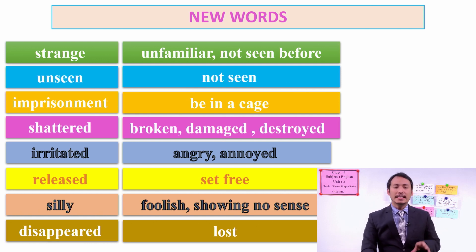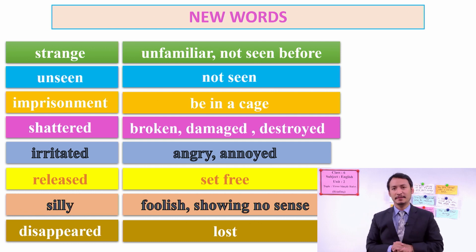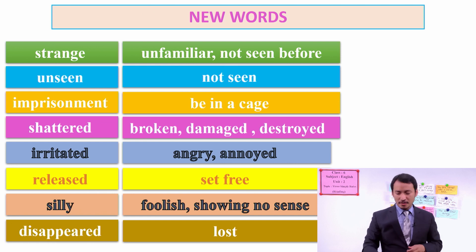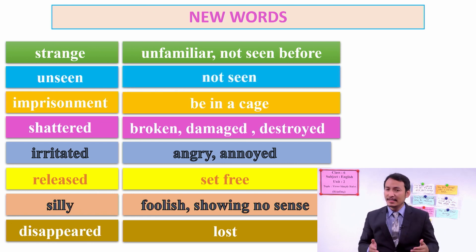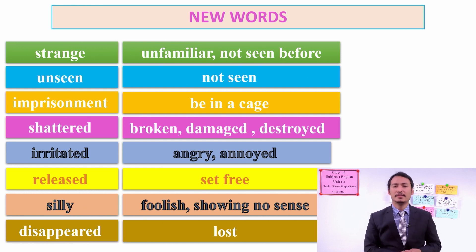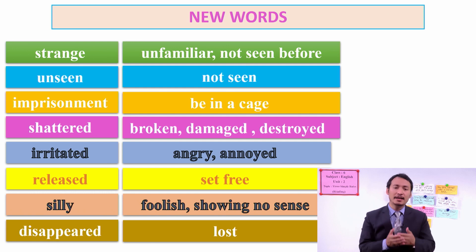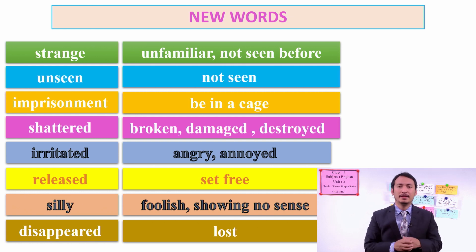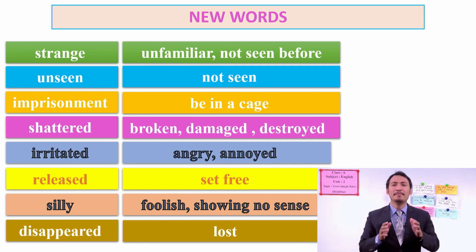In the story, the unseen thing was the bird because the man had not seen it before — it was unfamiliar. Unseen also describes how the man tried to approach the bird without being seen, to catch it. Imprisonment means being kept in a cage — here the bird was imprisoned, meaning the man kept the bird in an enclosure.